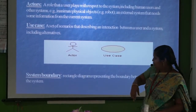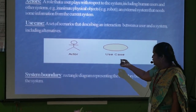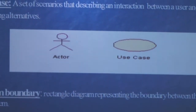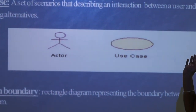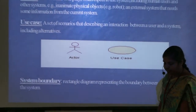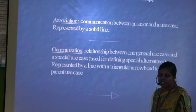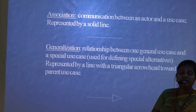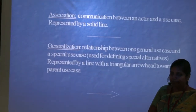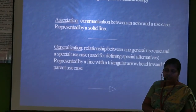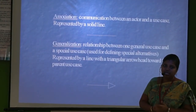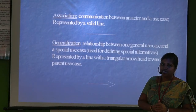An actor is represented simply by a stick figure. The use case, which the actors participate in, is a set of scenarios we are addressing — it is an interaction between the user and the system. The association can be used in the class diagram and in use cases; it is represented by a solid line. For the generalization — in the case of a parent-child relationship — we use the triangular arrow symbol for the generalization relationship.